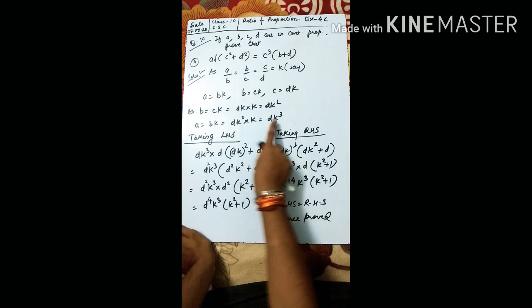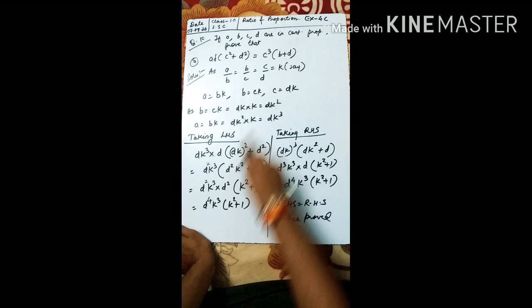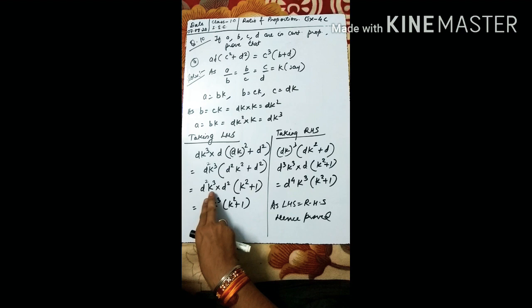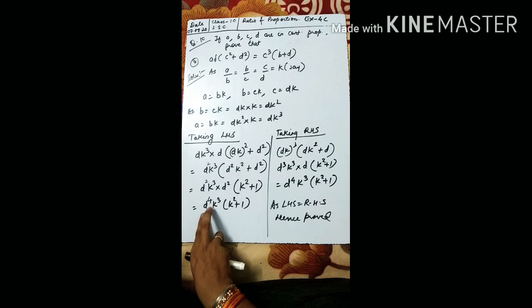Taking LHS: ad(c² + d²). a = dk³, d = d. In the bracket, c = dk so c² = dk² = d²k². So we get dk³ · d(d²k² + d²). Take d² common: d²k³ · d²(k² + 1), giving d⁴k³(k² + 1).